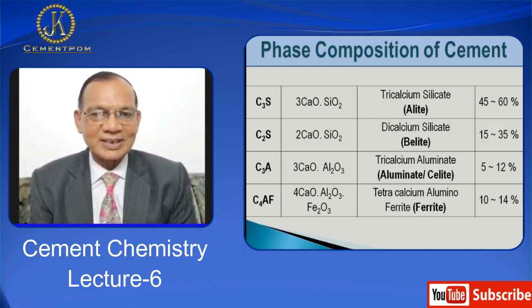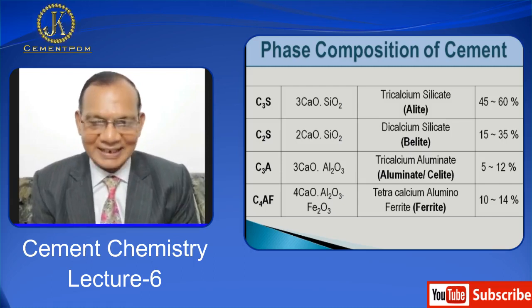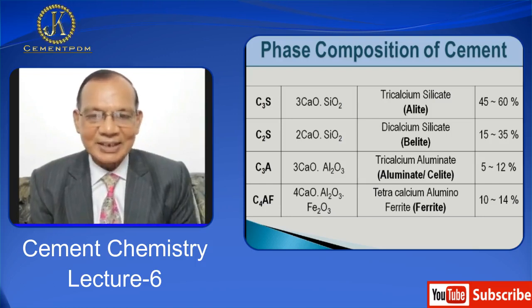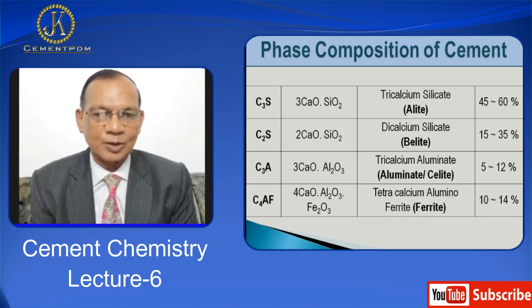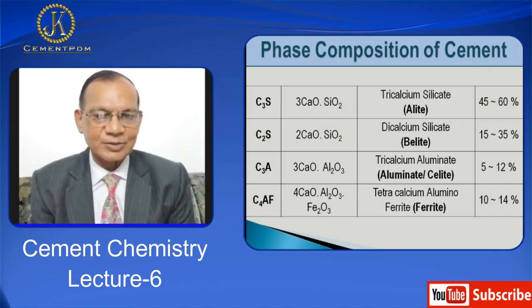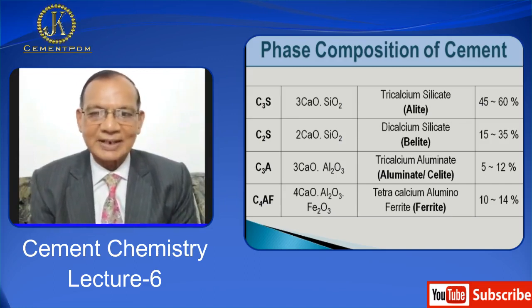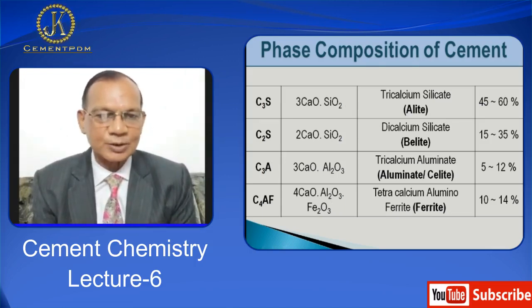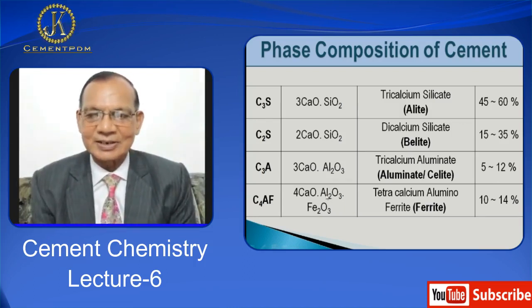The percentage of alite or C3S in cement is 45 to 60%. Then you have C2S, that is 2CaO·SiO2, dicalcium silicate. In industrial clinker it is called belite, not pure C2S, and it constitutes 15 to 35%. The third component is C3A, that is 3CaO·Al2O3, tricalcium aluminate.